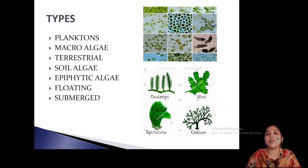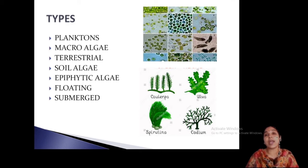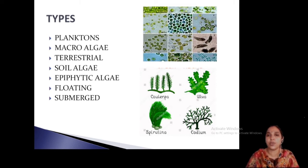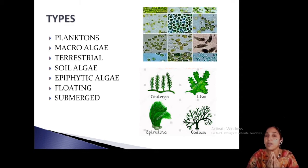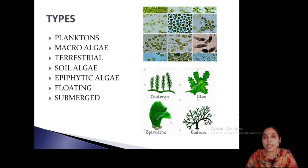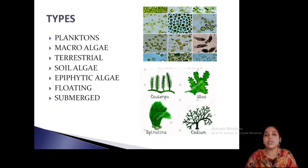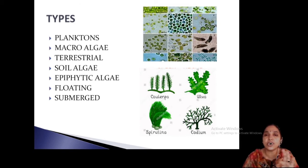Algae may be of different sizes — they may be microscopic or macroscopic. Some you can see with your naked eyes, and some you can observe only under a microscope. There are planktonic forms, there are macroalgae, there are terrestrial forms growing in soil or on tree trunks, then floating and submerged forms — various types. Collection methods for all these types are entirely different.